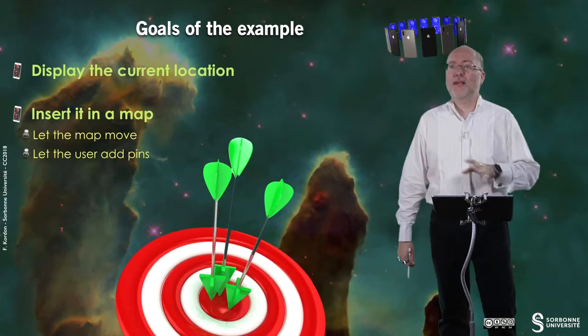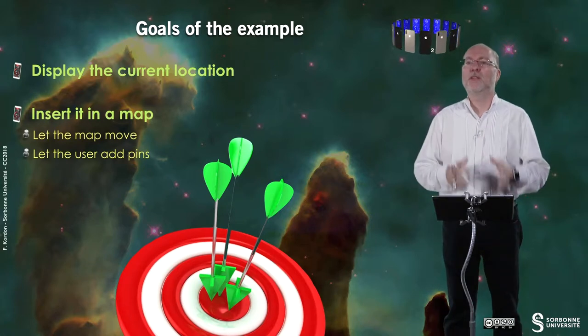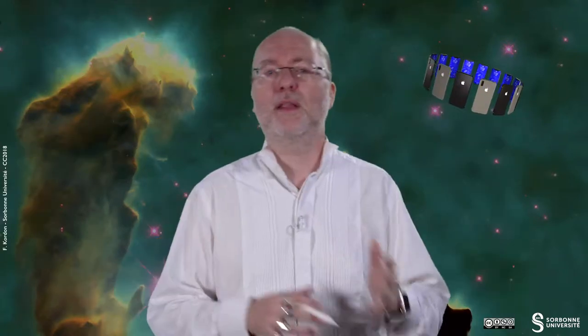Where am I? The goals of the example are quite simple: to display the current location and to insert it in a map, so let the map move and let the user add some pins. That's all.